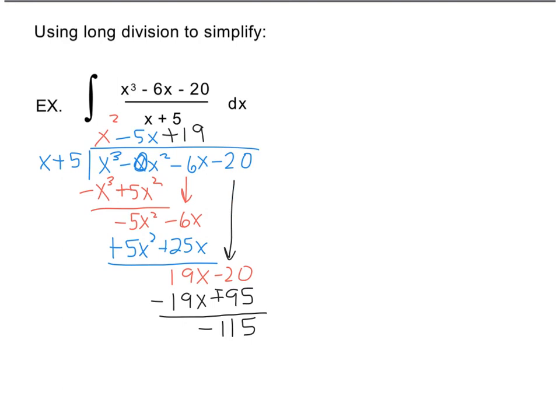So by dividing x cubed minus 6x minus 20 by x plus 5, this is what I end up with. So equals integral of x squared minus 5x plus 19 minus 115, this is my remainder, over the divisor dx.